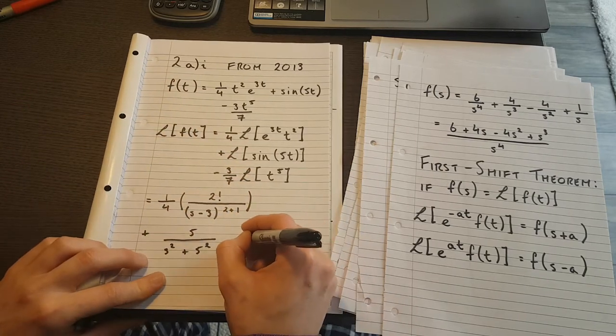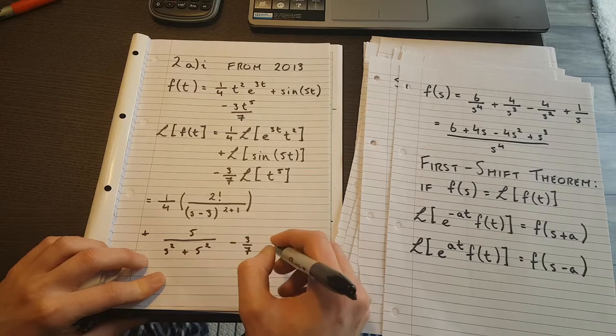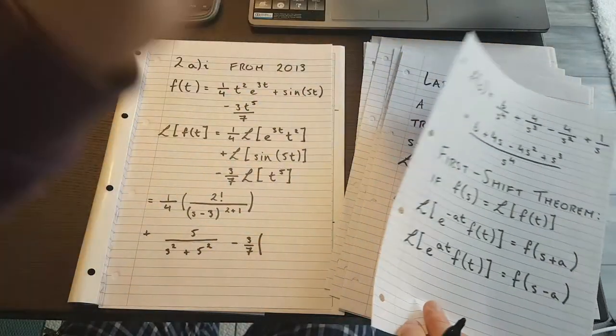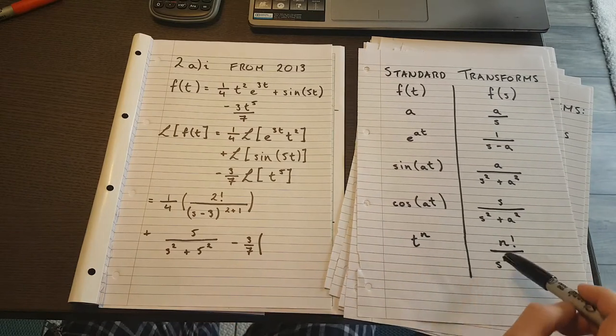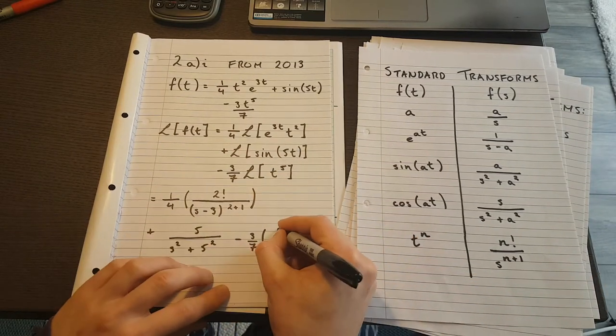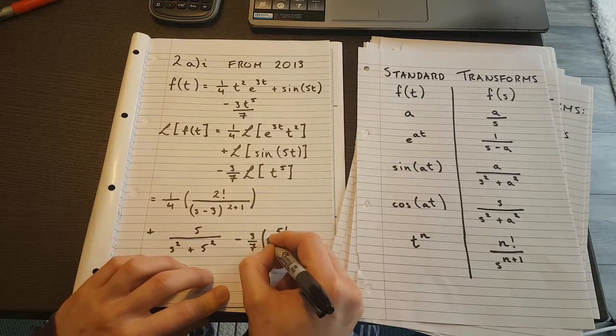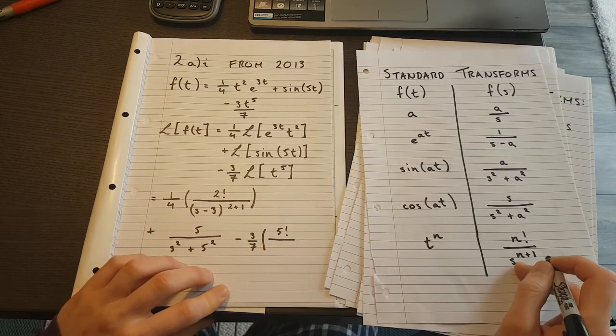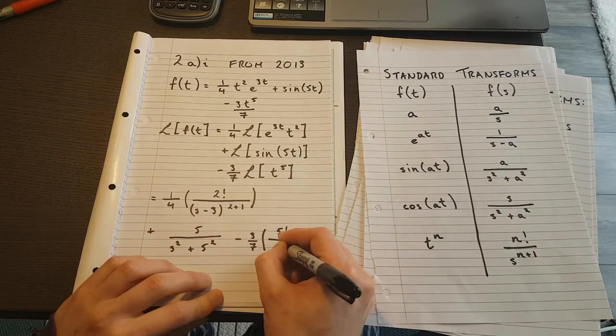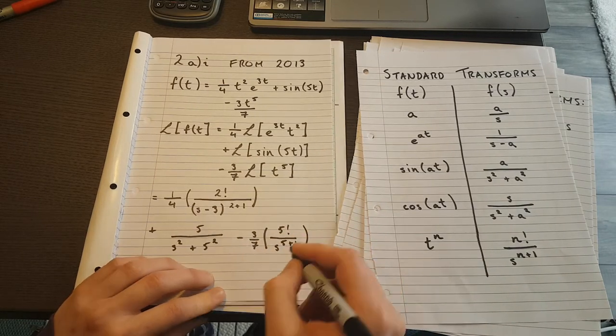And then I have this one here, and then I have minus 3/7, which is just a multiplier that stays on the outside. And now I look at my situation here, we see the t^5, that's going to give me a 5 factorial, and on the bottom I'm going to have s^(5+1).